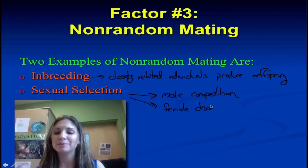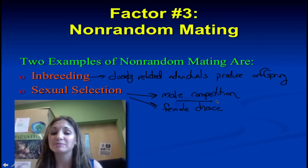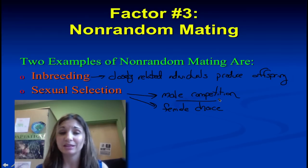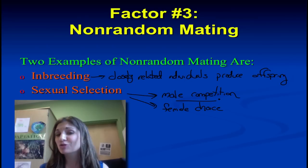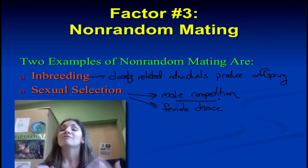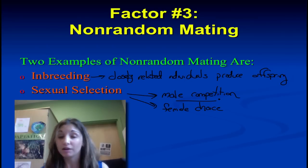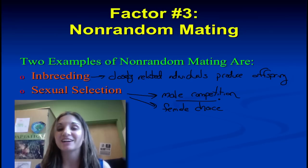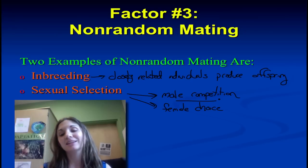While male competition was easily accepted by Darwin's contemporaries because it was easy for them to conceptualize, female choice was a lot harder to convince them of — because far be it from mere females to have the ability to affect change in a population. But in fact, we see this time and time again. Let's take a closer look at each of these.